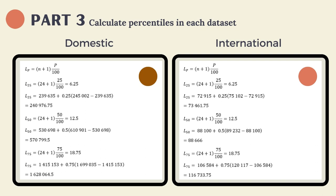For domestic, after calculation, the 25th percentile is 240,935.75, the 50th percentile is 570,699, and the 75th percentile is 1,628,064.5. For international, after calculation, the 25th percentile is 73,461.75, the 50th percentile is 88,666, and the 75th percentile is 116,733.75.